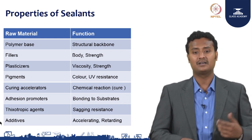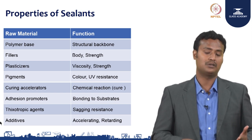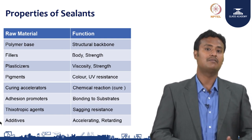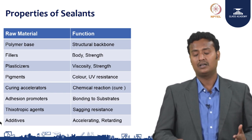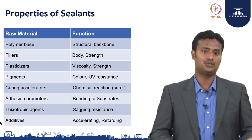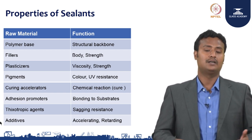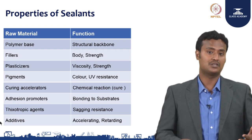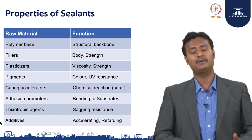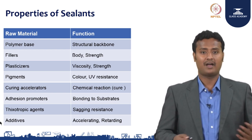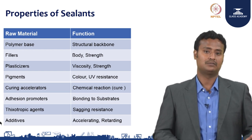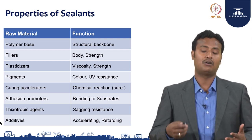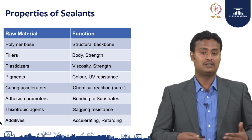The curing accelerator drives the chemical reaction and cure. It is most important in the DGU process — you apply today and should not have to wait a week to cure because the customer needs immediate service. A maximum of 4 hours should be sufficient to dispatch your DGU. That is why the curing accelerator helps you dispatch faster, and the silicon should have a proper curing accelerator. Adhesion promoters provide bonding to substrates — this is one of the best qualities of tough silicone. If adhesion fails, everything will be a problem. The adhesion promoters bond the silicon to substrates like aluminum and glass surfaces during glazing.